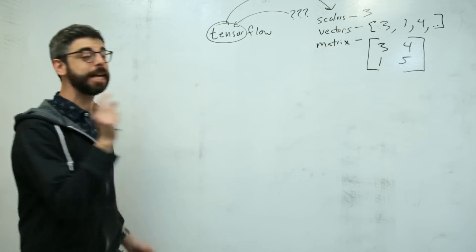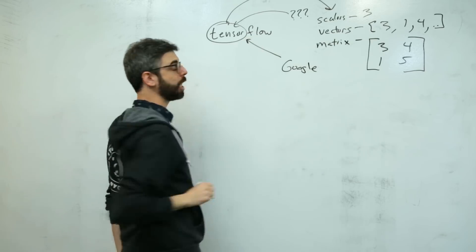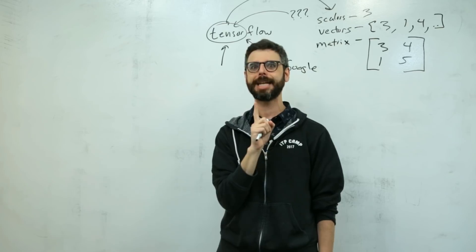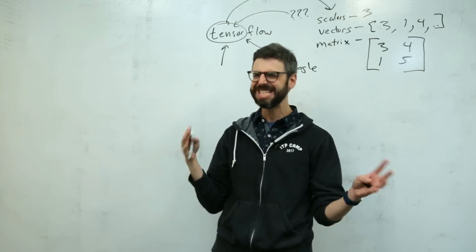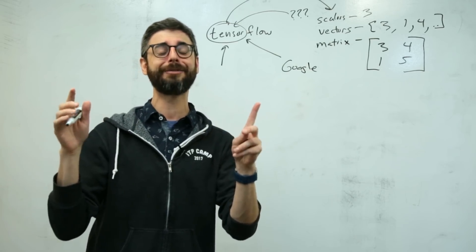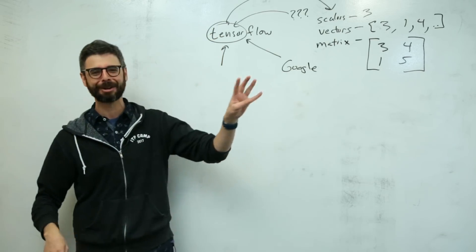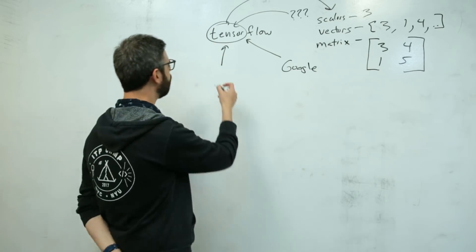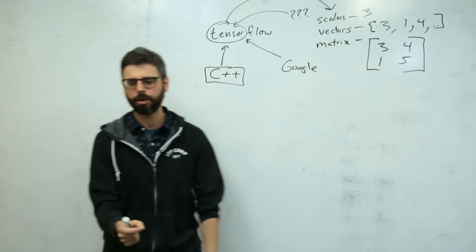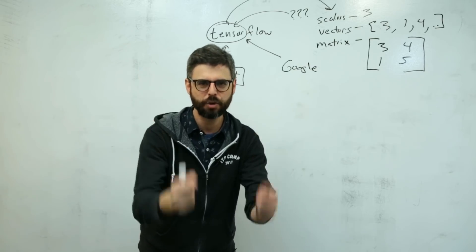So a tensor is a structure, a data structure essentially, that can store any n-dimensional version of these types of things. Because the building blocks of any machine learning algorithm are matrices of numbers, this idea of TensorFlow, let's flow with the tensors. This is where the name TensorFlow comes from. TensorFlow is Google's open source machine learning library.